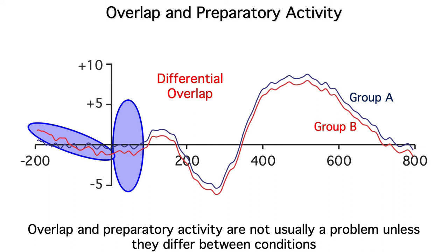And then, if you take a close look at the methods section, you'll probably see that there's some kind of problem with the experimental design that led to differential preparation or differential overlap.